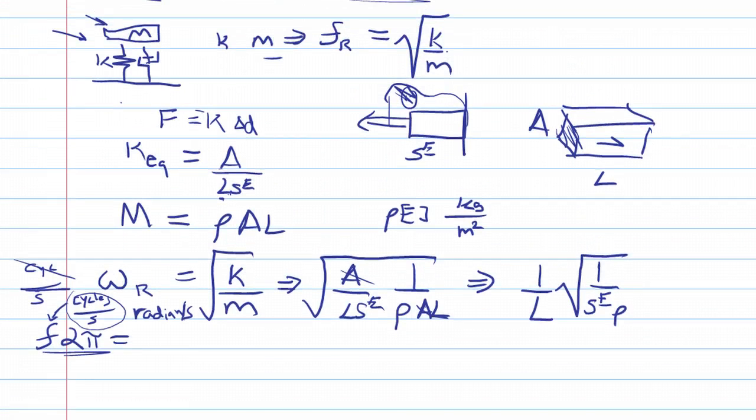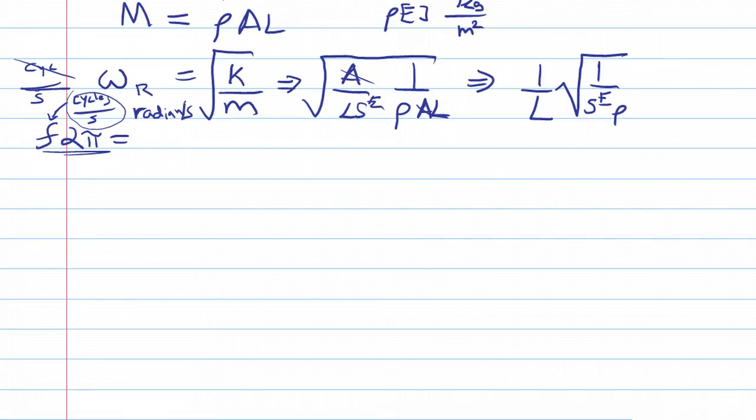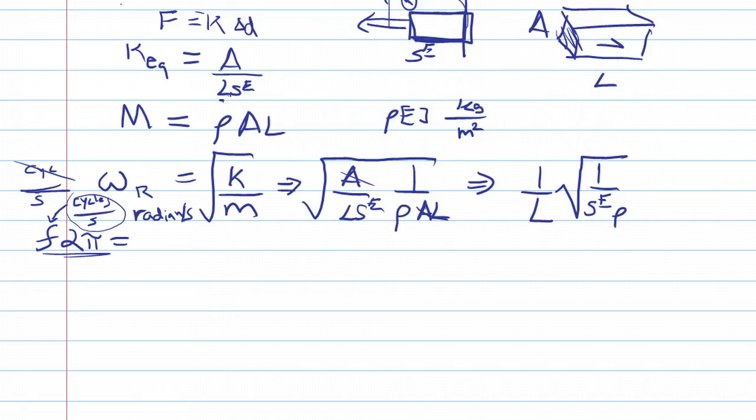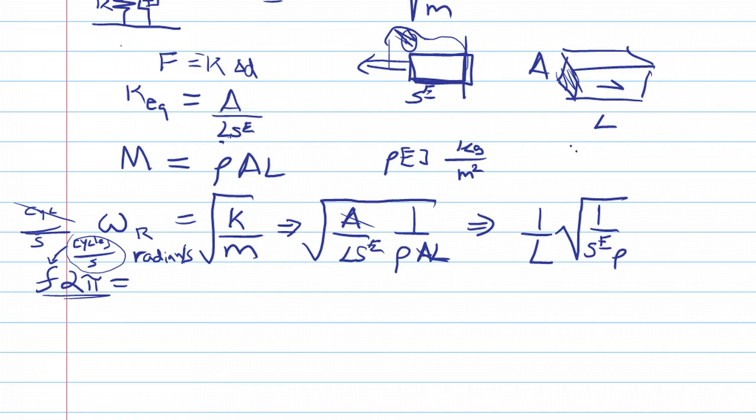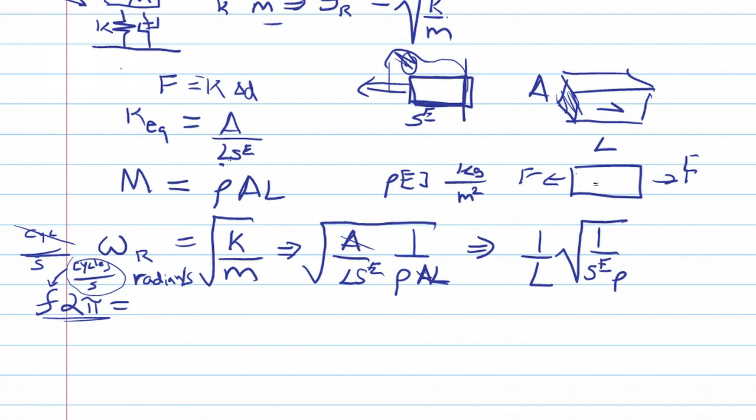And this is for the case where we have a rod stuck to a wall. This is the resonance frequency for that case where we have a force doing this. For the case where we have a material which is having a stress, having the force applied this way and this way—because if the forces are canceling each other out, this material is going to get bigger, right, because you're pulling on it on both sides.